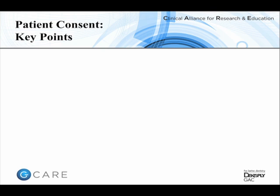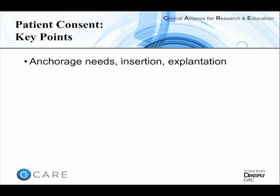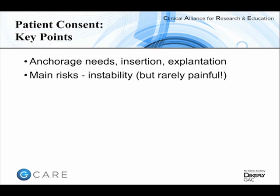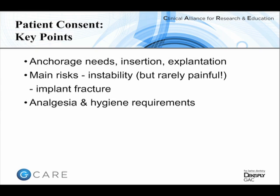When discussing mini-implant usage with a patient, I cover several key points: explaining why they need anchorage, what's involved in the insertion process, and reassuring them that removal is very straightforward. The biggest risk I highlight is instability or looseness, but I reassure them that if a mini-implant does come loose they're unlikely to notice it and it's rarely a painful occurrence. It's also worth informing the patient about analgesic and hygiene requirements — analgesic requirements are very low and hygiene requirements are very straightforward.